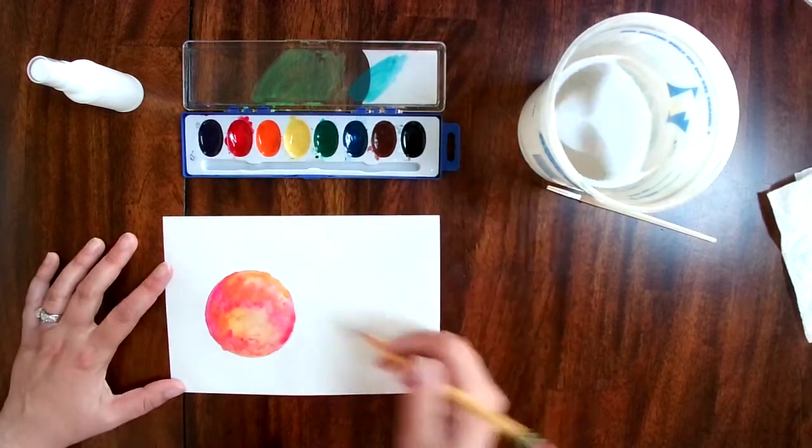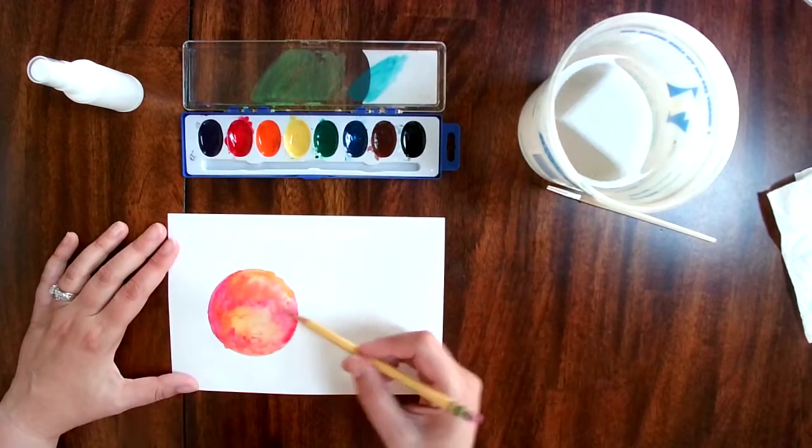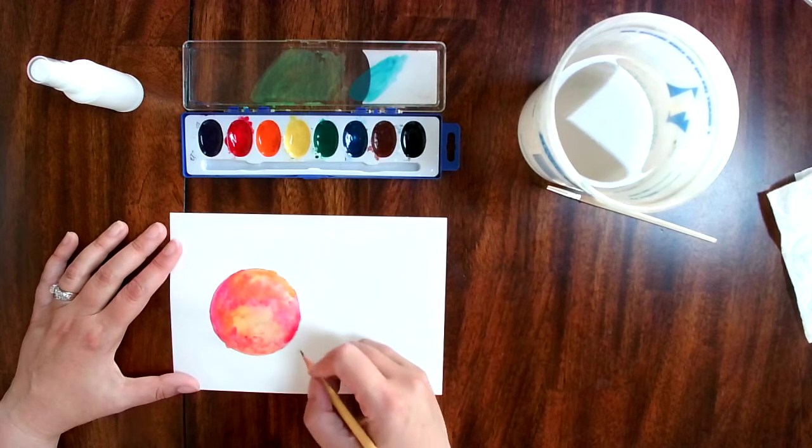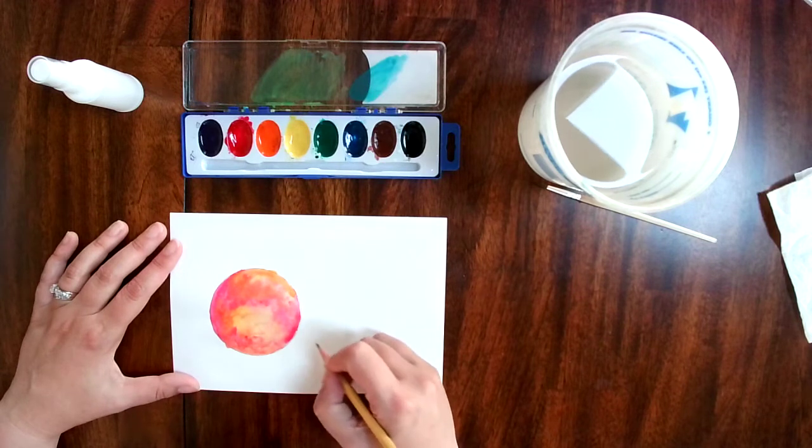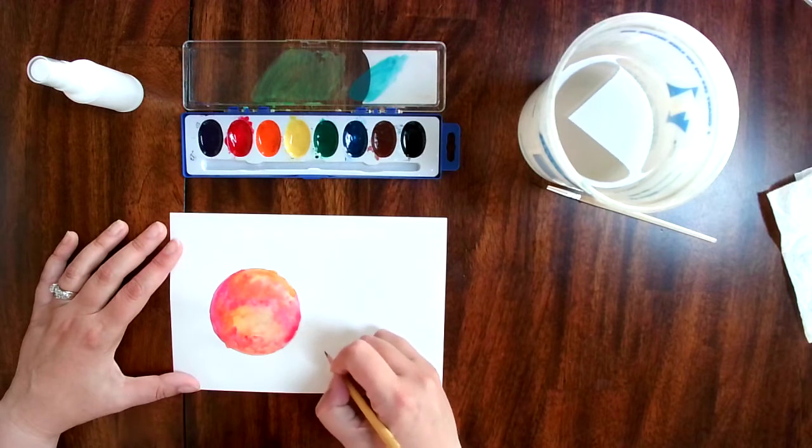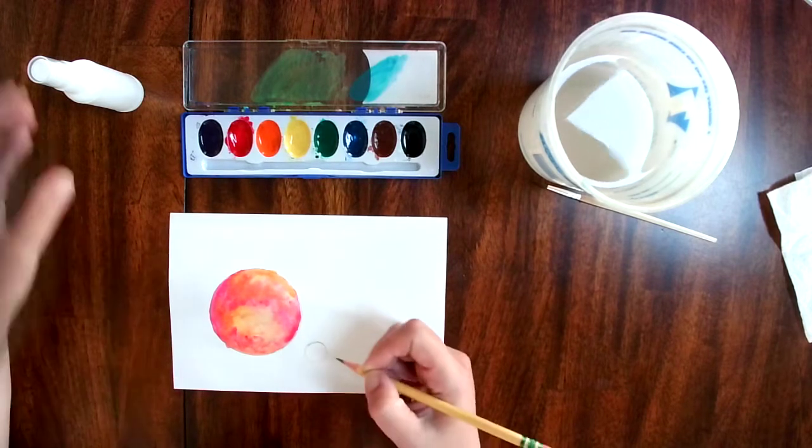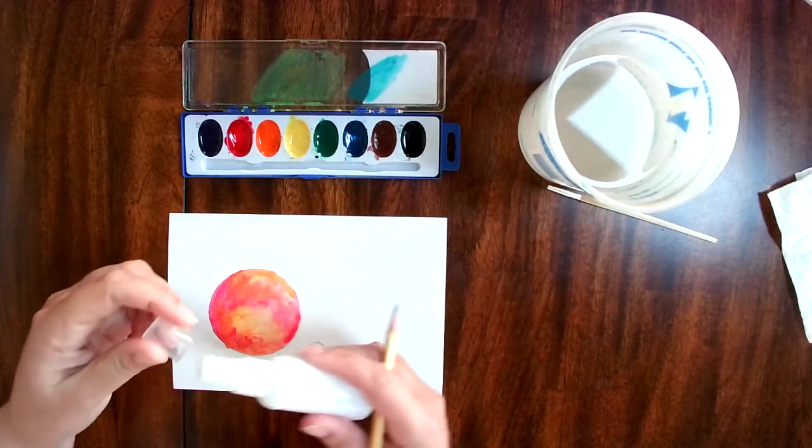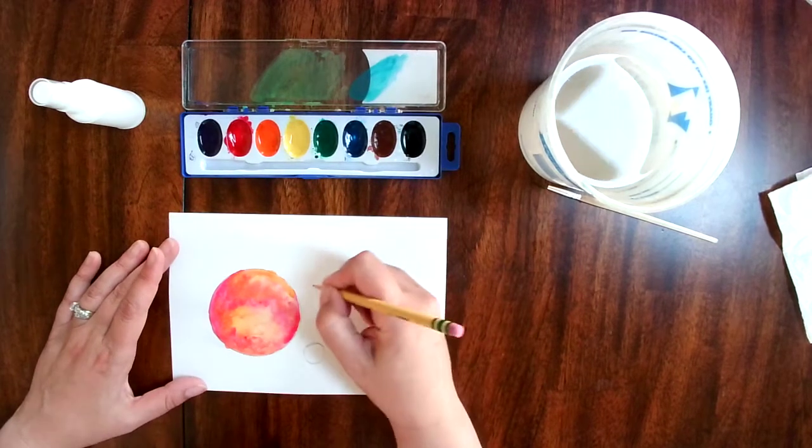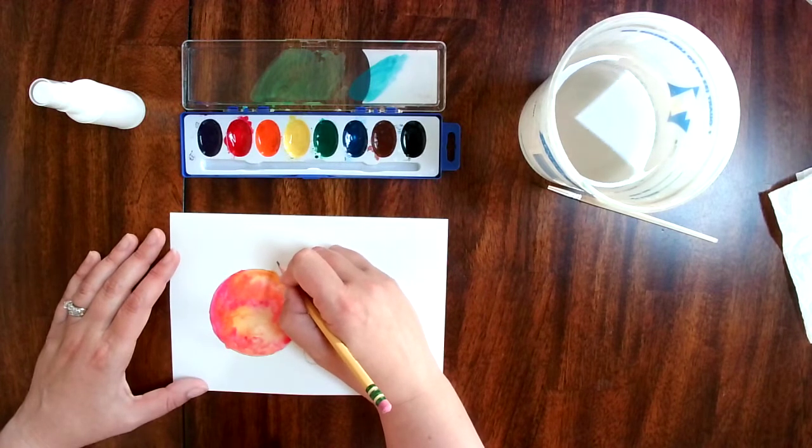All right, my watercolor planet is dry. Now I need to think about what I want to have happening out here in space, and I think I want to have my planet maybe have a couple of moons and maybe there's even a shooting star. So I think I'm gonna put a moon right here. Now if you want to trace something that's round that's about that size, you definitely can do that - maybe even the lid would work. We're just gonna freehand it. There's a moon there, maybe there's another one - a smaller one right back here.